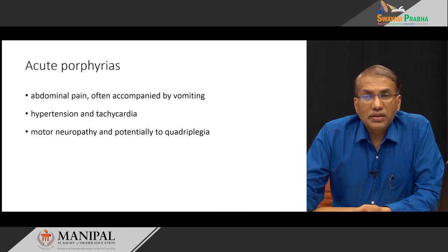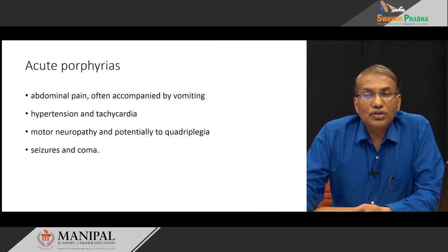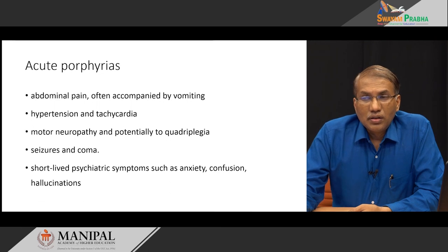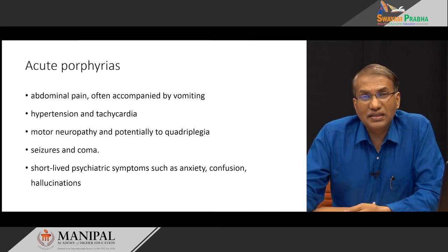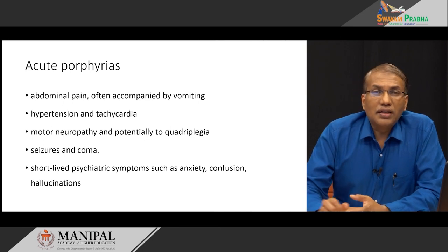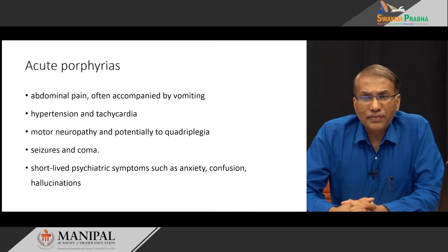Acute porphyrias can also cause motor neuropathy, sometimes severe enough to cause paralysis-like attacks in all four limbs. Fits or seizures may occur, which may lead to a comatose situation. Sometimes there are short-lived psychological manifestations such as anxiety, confusion, and hallucinations. Unfortunately, these are often not diagnosed because the symptoms are not confined to one system, and clinicians may feel they are related to tension or stress.